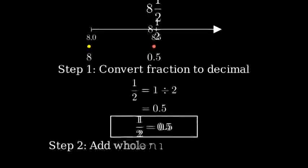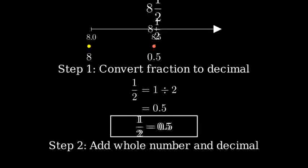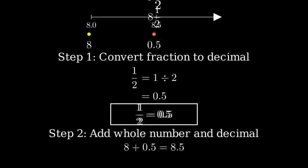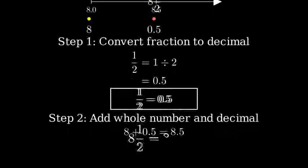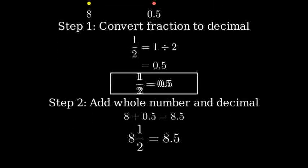Step 2, add the whole number 8 to the decimal 0.5. 8 plus 0.5 equals 8.5. Therefore, 8 and 1 half as a decimal is 8.5.